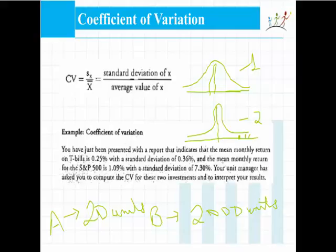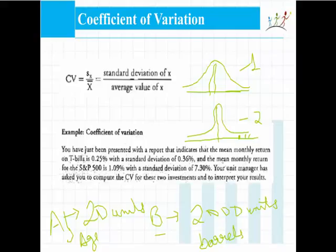Just because the standard deviation is 2000 units, I cannot necessarily say that distribution B will be more dispersed, because I do not know the absolute scale. Distribution A could be the distribution of age in a class, where a standard deviation of 20 units is very high — meaning there are either 5-year-olds or 45-year-olds. Distribution B could be the distribution of millions of barrels of oil production, where 20 billion barrels are produced every year. In that context, a standard deviation of 2000 units means nothing. So an absolute standard deviation number cannot be compared amongst distributions, because we don't know the mean or the absolute scale.